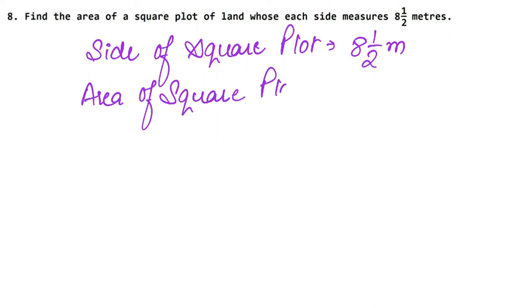So what will be the area of square plot? The area of square plot is side into side. So how much was our side? 8 whole 1 upon 2 meters. So we will multiply it with that. Meter square because we have to state the area. Square unit, so that is meter square.